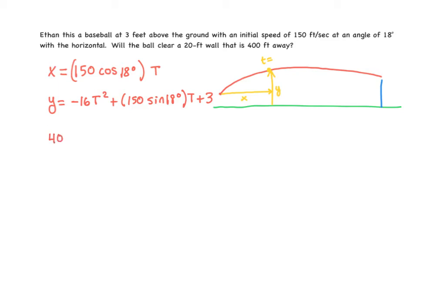So I'm going to set 400, that's the horizontal distance from the start to the wall equal to, that's my x value, 150 cosine of 18 degrees times t. And then solving for t, because I need to know at what time it reaches the wall, I would do 400 divided by 150 cosine of 18. And that's going to give me a time of about 2.804 seconds.